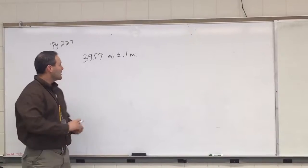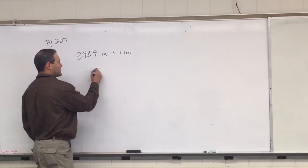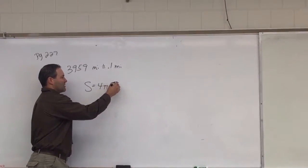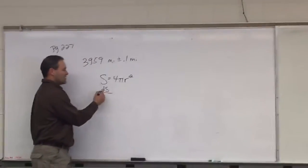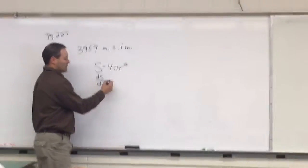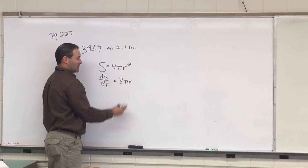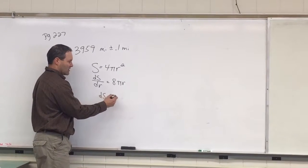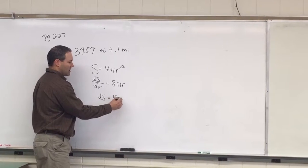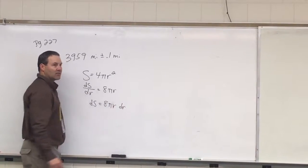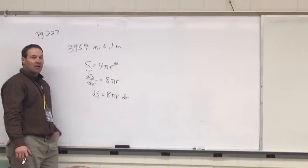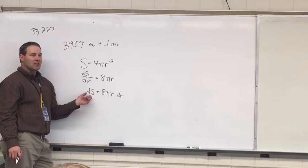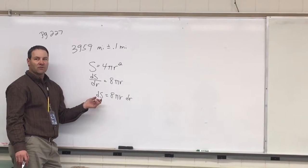Alright, so if we have the surface area of sphere is 4 pi r squared. So we can go dS dr equals 8 pi r. So your change in the surface area is, we can actually multiply both sides by dr. The dr represents the change in radius. The dS stands for the change in surface area.